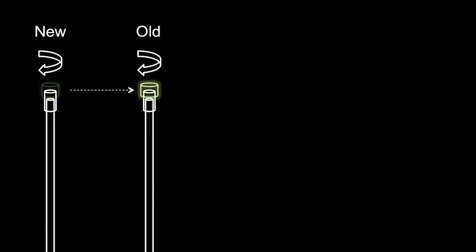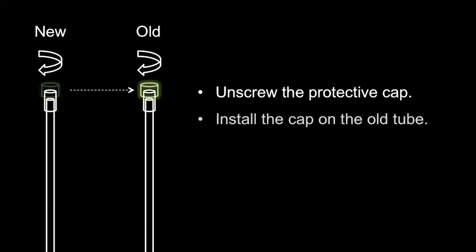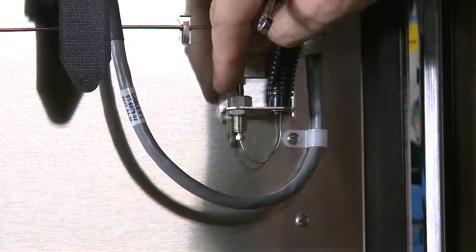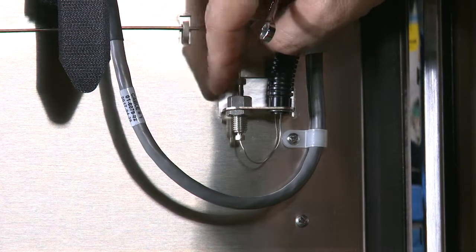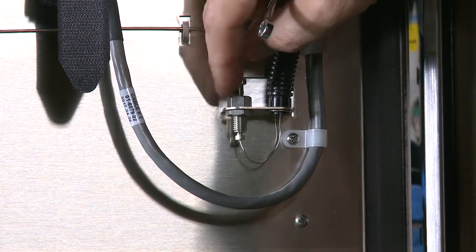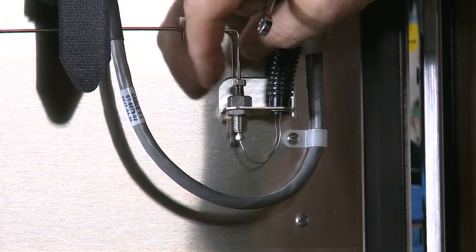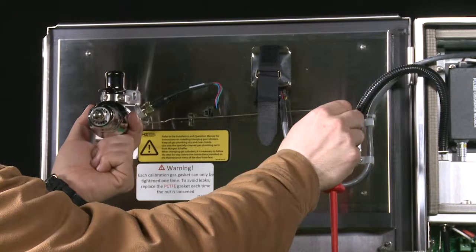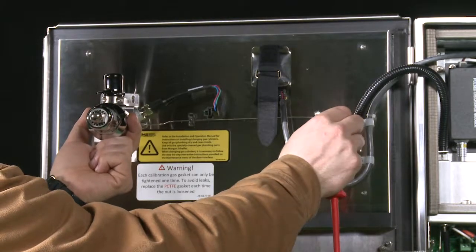With two quarter-inch open-end wrenches, unscrew the tube's protective cap. Install the cap on the old calibration gas module tube. Screw it finger-tight. While holding the calibration gas module in place with one hand, insert the calibration gas tube into the adapter fitting and screw it finger-tight. Insert the tube carefully into both raised legs.